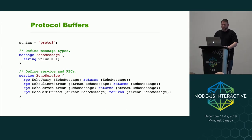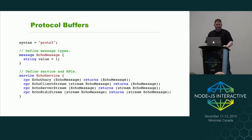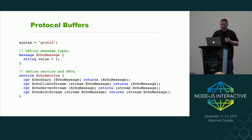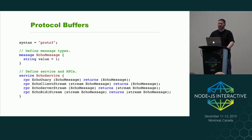Next we define a service — an echo service with four different RPC types: unary, client stream, server stream, and bi-directional streaming. It says 'rpc EchoUnary' — that's the name of your function call — and in parentheses that's your input. It takes an EchoMessage and returns an EchoMessage. For the streaming ones, there's a 'stream' keyword that gets prepended. At least for the protocol buffers, it's that simple to switch between unary and streaming RPCs.